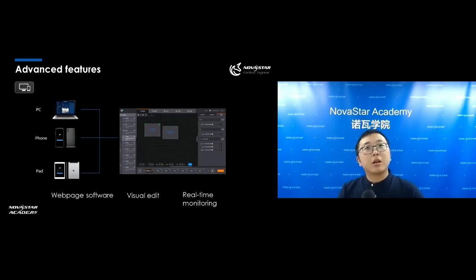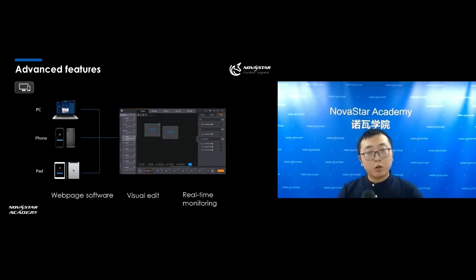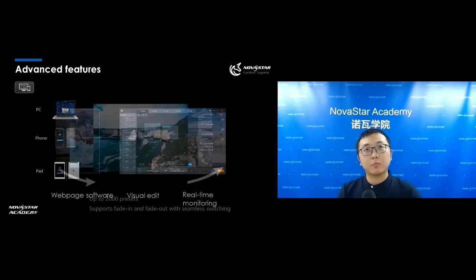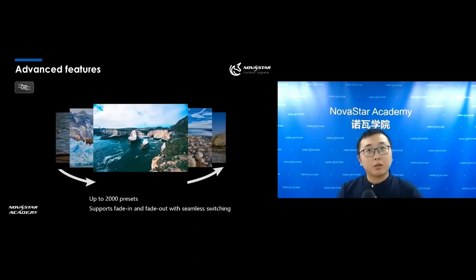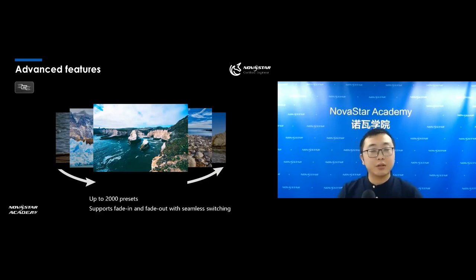The first feature is that the software is compatible with PC, phone, and tablet. Our configuration interface can run on any device that has a browser, with a visual edit function to make configuration easier, and real-time monitoring to check the status of the input and output. The next feature is presets — each series can support up to 2,000 presets, which should be enough for our customers' needs, and it also supports fade-in and fade-out with seamless switching.